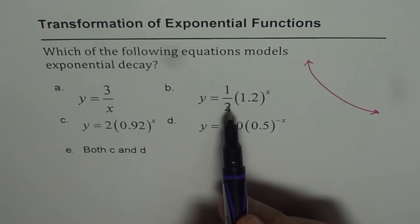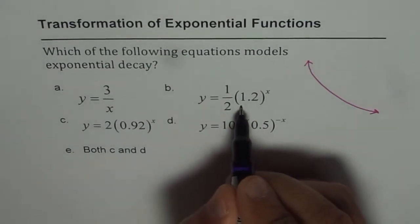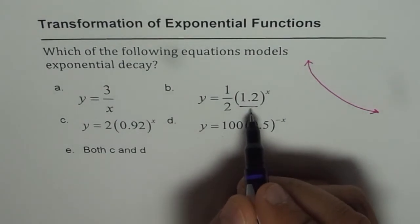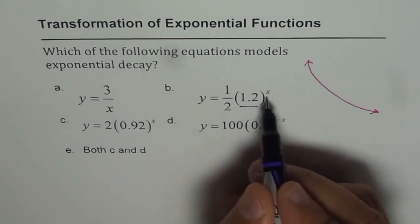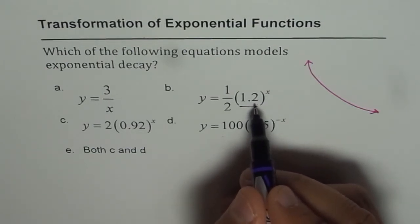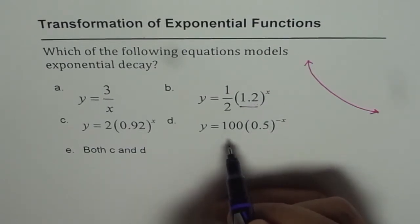The second one is half. This is the amplitude. This part decides the growth factor or the decay factor. 1.2 is more than 1 and the exponent is positive. So it is growth, not decay. So that is not our option.